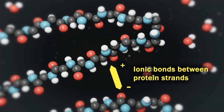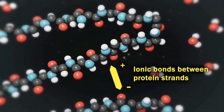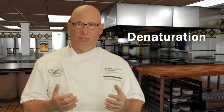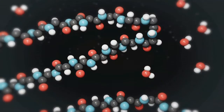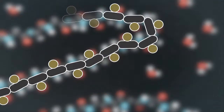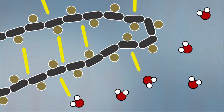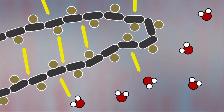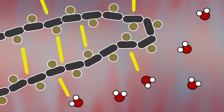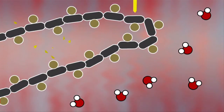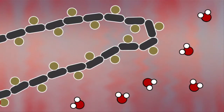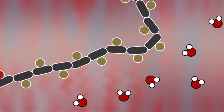Any changes to the interactions will result in the protein taking a different shape. When a protein is changed from its natural shape due to disruption of interactions, it is denatured. The most common way proteins are denatured in the kitchen is by heat. Heat weakens hydrogen bonds, and as a result any interaction between polar amino acids with the water surrounding the protein is weakened and the protein unfolds.